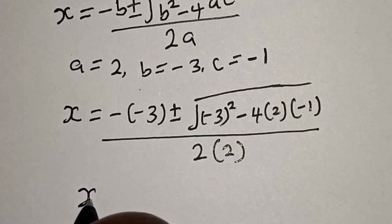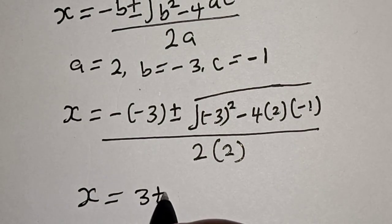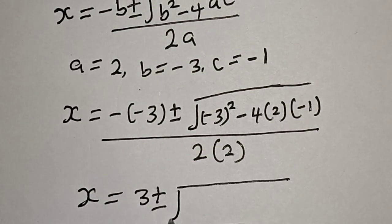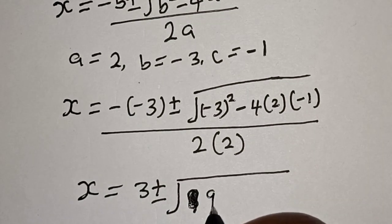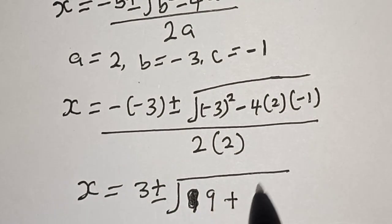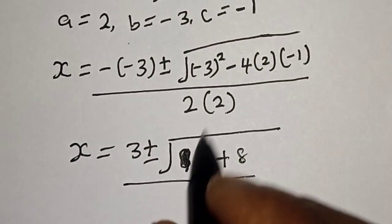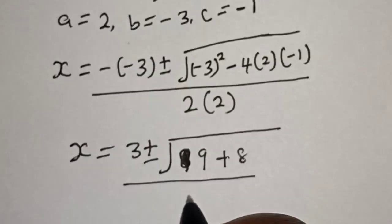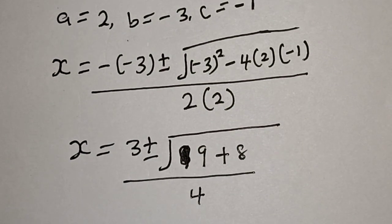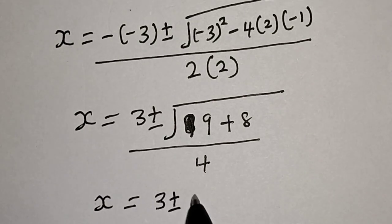Then we have s equal to 3 plus or minus square root of 9 plus 8, over 4.